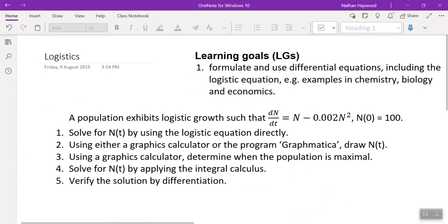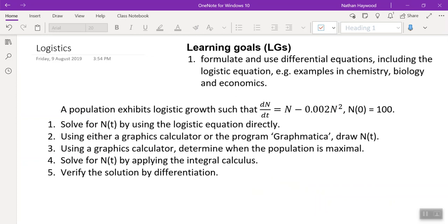This is called the logistics model. It was developed in the 1800s, 1700s. You've got a population. It exhibits logistic growth defined by this. And what does this tell us? The initial population is 100, let's say, people, dogs, whatever it is, bacteria.